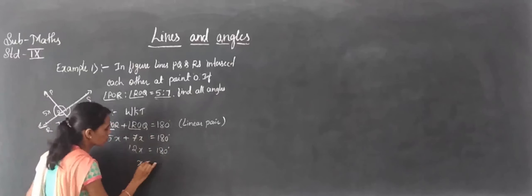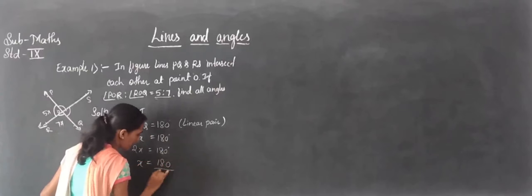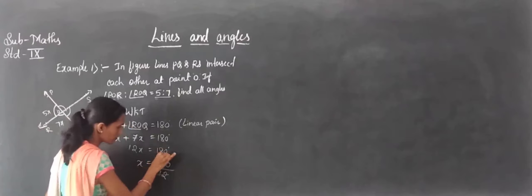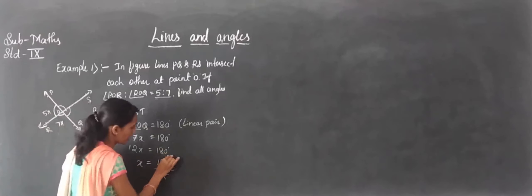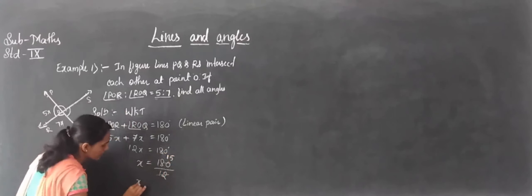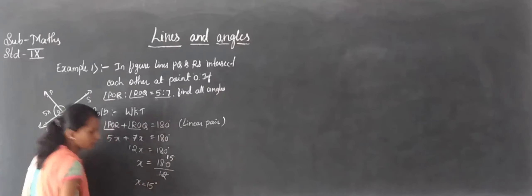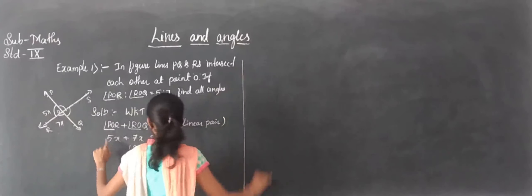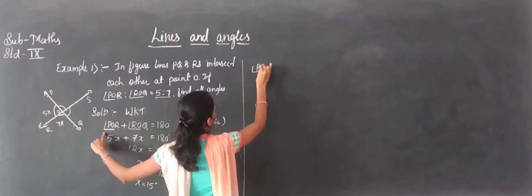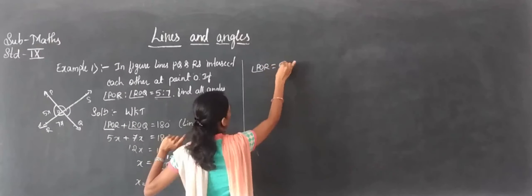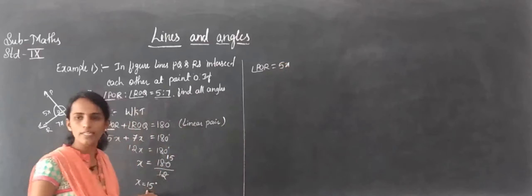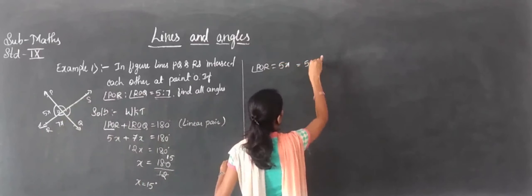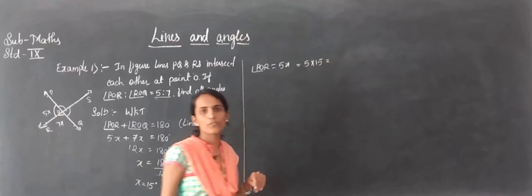So 5x plus 7x gives us 12x equals 180 degrees. Therefore x equals 180 divided by 12, which gives us x equals 15 degrees. Now we find the proper angles: angle POR equals 5x.